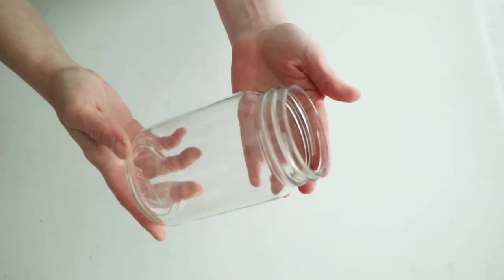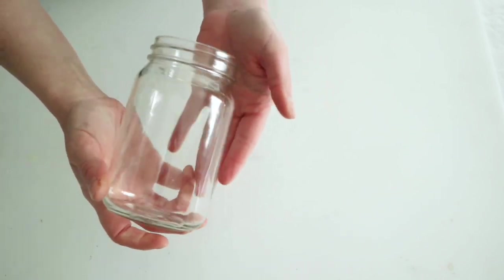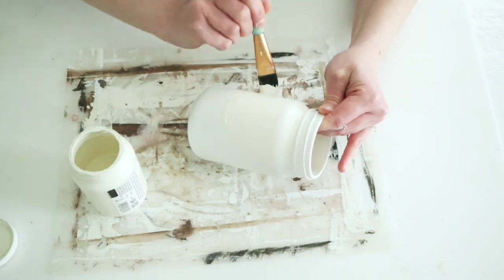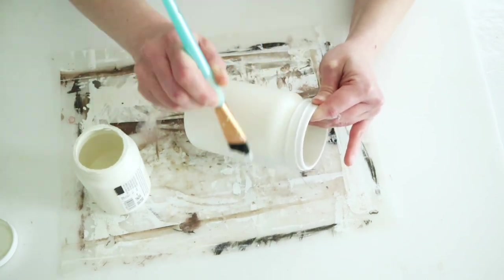For this project, I'm just using a glass jar. This is just one that I got from Dollar Tree, and I'm giving it two coats of my Waverly chalk paint in the color Plaster.